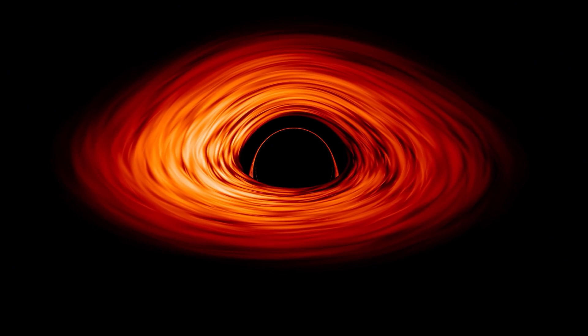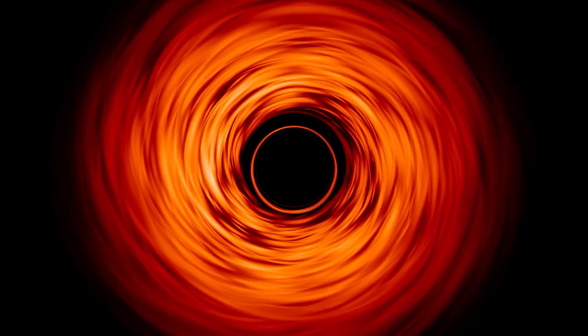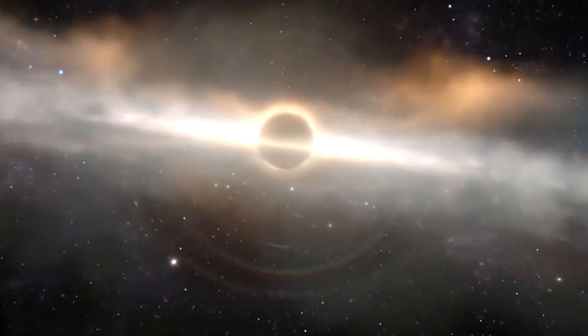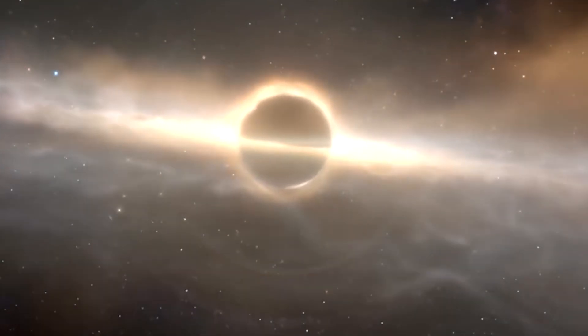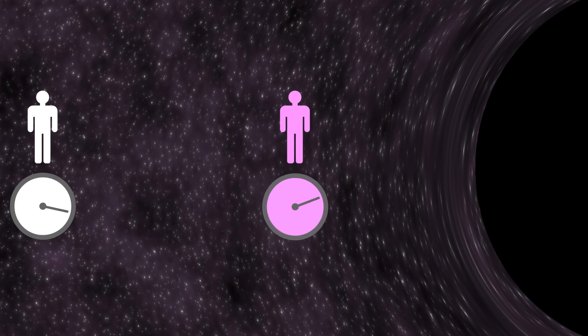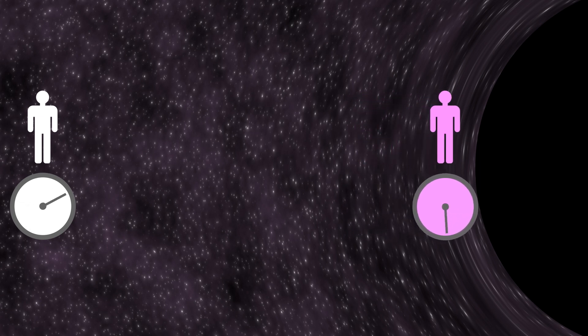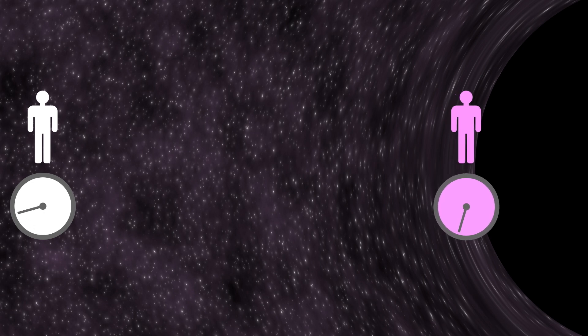Another misconception about black hole physics, related to attempts to describe them using classical logic, is the following. Supposedly, no object can fall into a black hole from the point of view of an external observer. Because as it approaches the event horizon, time, from the external observer's perspective, slows down and stops completely at the horizon. And once time is stopped, movement ceases, and the object appears to be suspended above the event horizon, never crossing it. This sounds logical, but only from a classical approach to describing mechanical processes in gravitational fields, where time and space are considered independent entities.